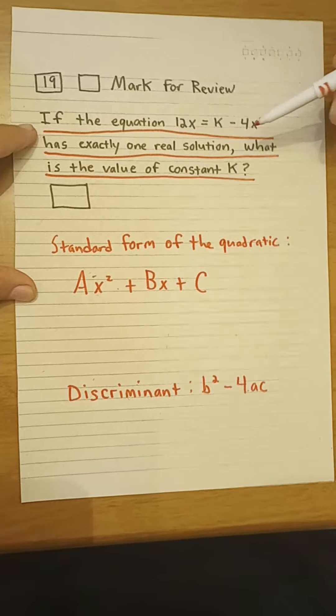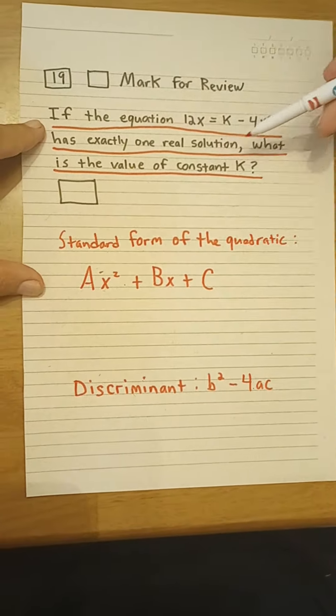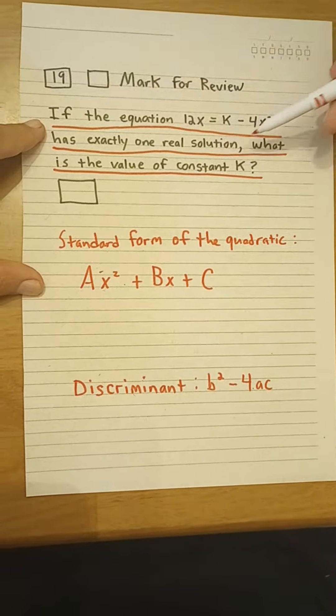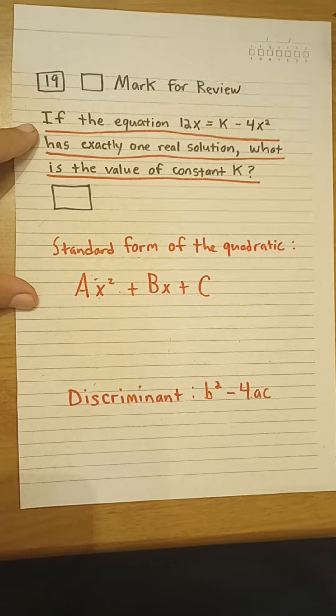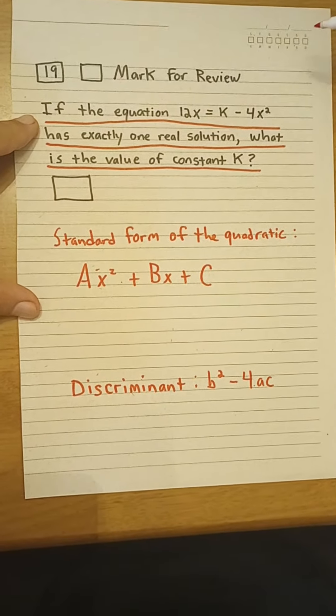We have an equation with exactly one real solution. We need to know the value of the constant k. When there is a quadratic with one real solution, it means the discriminant equals zero.